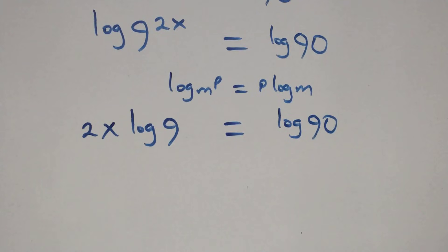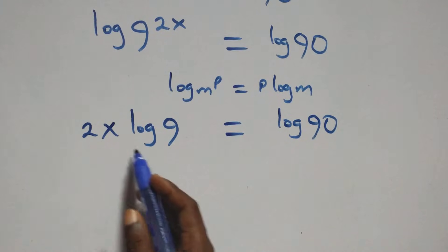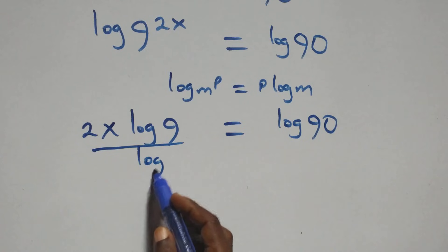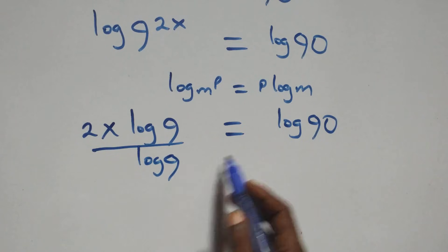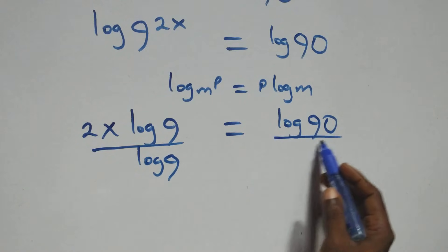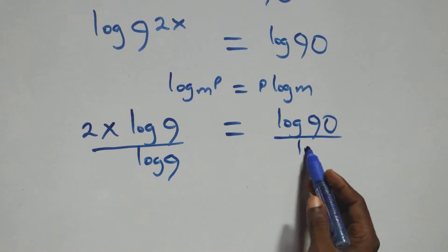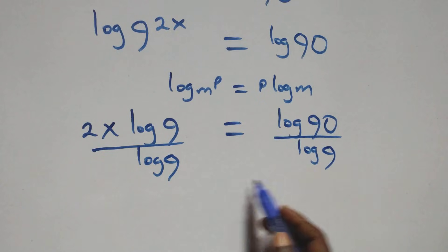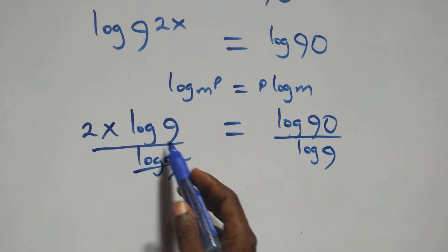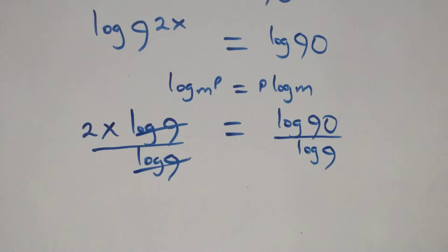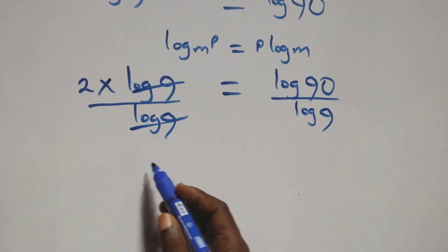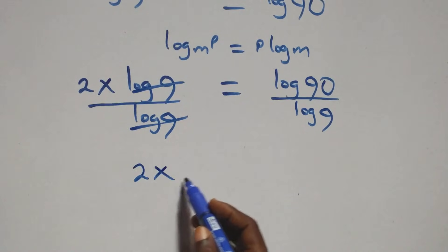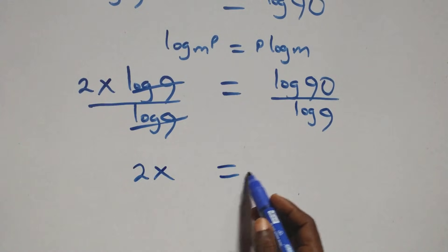From here we divide both sides by log 9 — divide this side by log 9 and also divide this side by log 9. The log 9 terms cancel each other, leaving us with 2x.